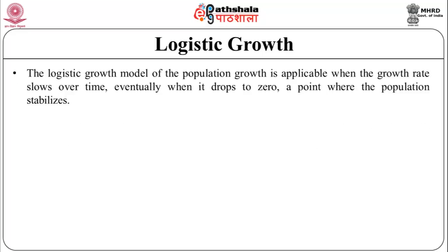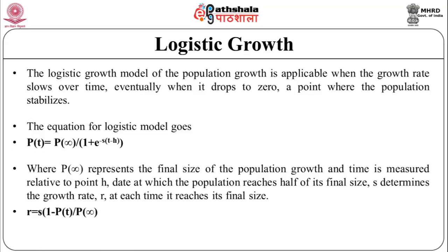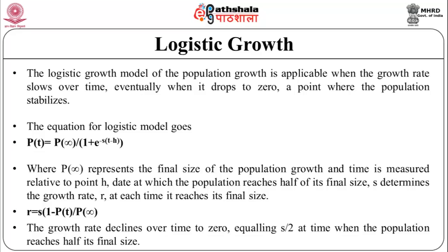The logistic growth model is applicable when the growth rate slows over time, eventually dropping to 0 at a point where the population stabilizes. The equation is p(t) = p(∞) / [1 + e^(−s·(t − h))], where p(∞) represents the final size of the population, h is the date at which the population reaches half its final size, and s determines the growth rate r at each time: r = s · [1 − p(t) / p(∞)]. Thus the growth rate declines over time to 0, equaling s/2 at time h.